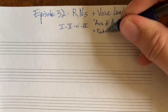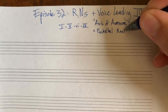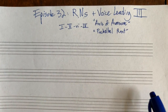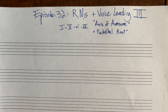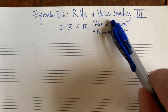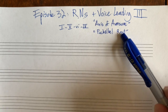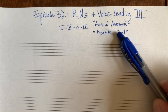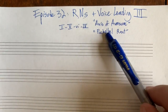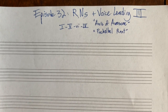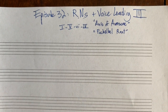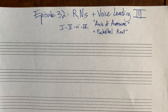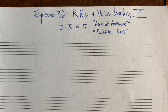The other one is called the 'Pachelbel Rant.' Axis of Awesome is like a band. What they both end up doing is playing a bunch of songs with the same chord progression. Axis of Awesome uses all this progression. Pachelbel Rant actually starts as a slightly different, longer progression, but then it shifts into this progression sneakily without telling you, to include more songs.